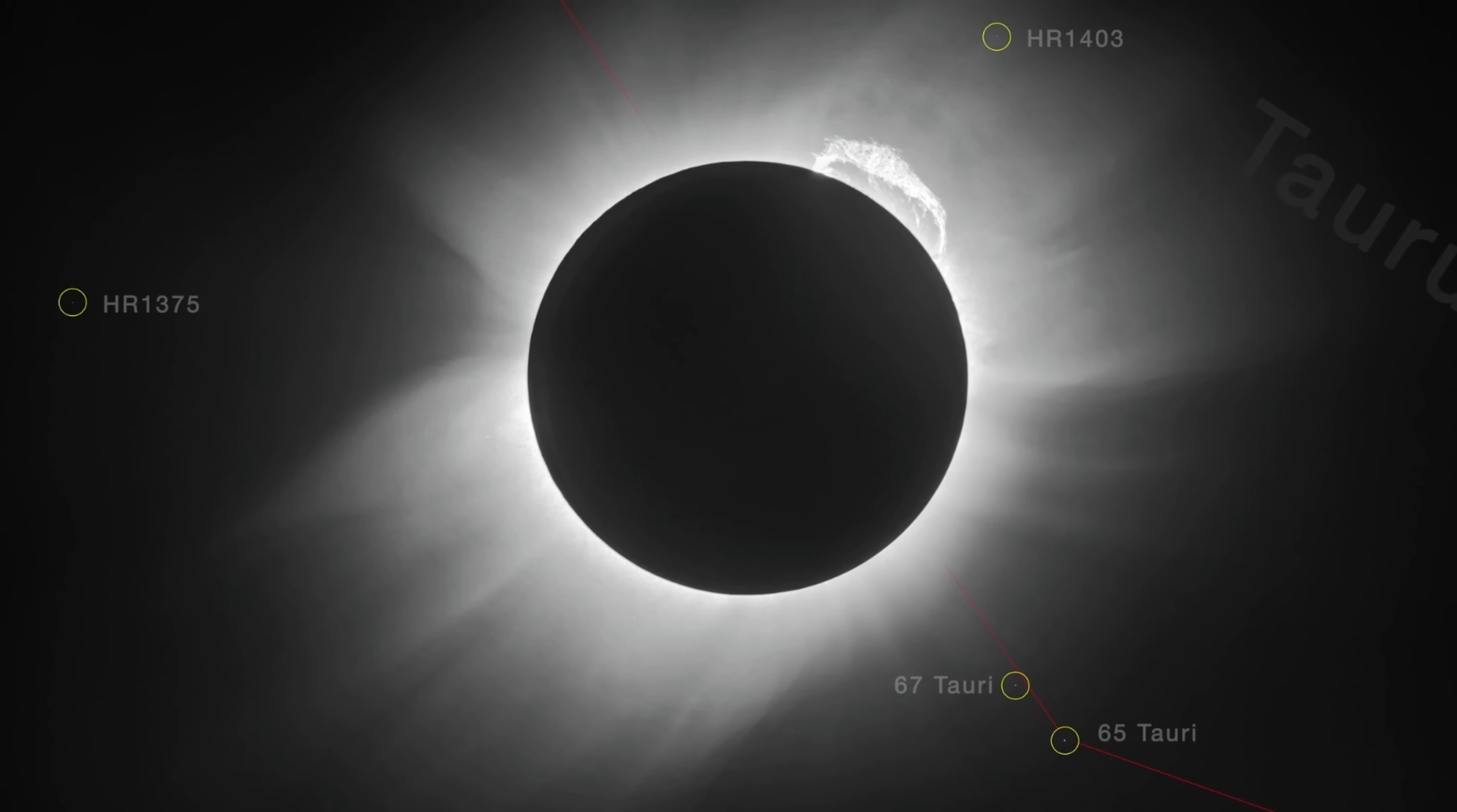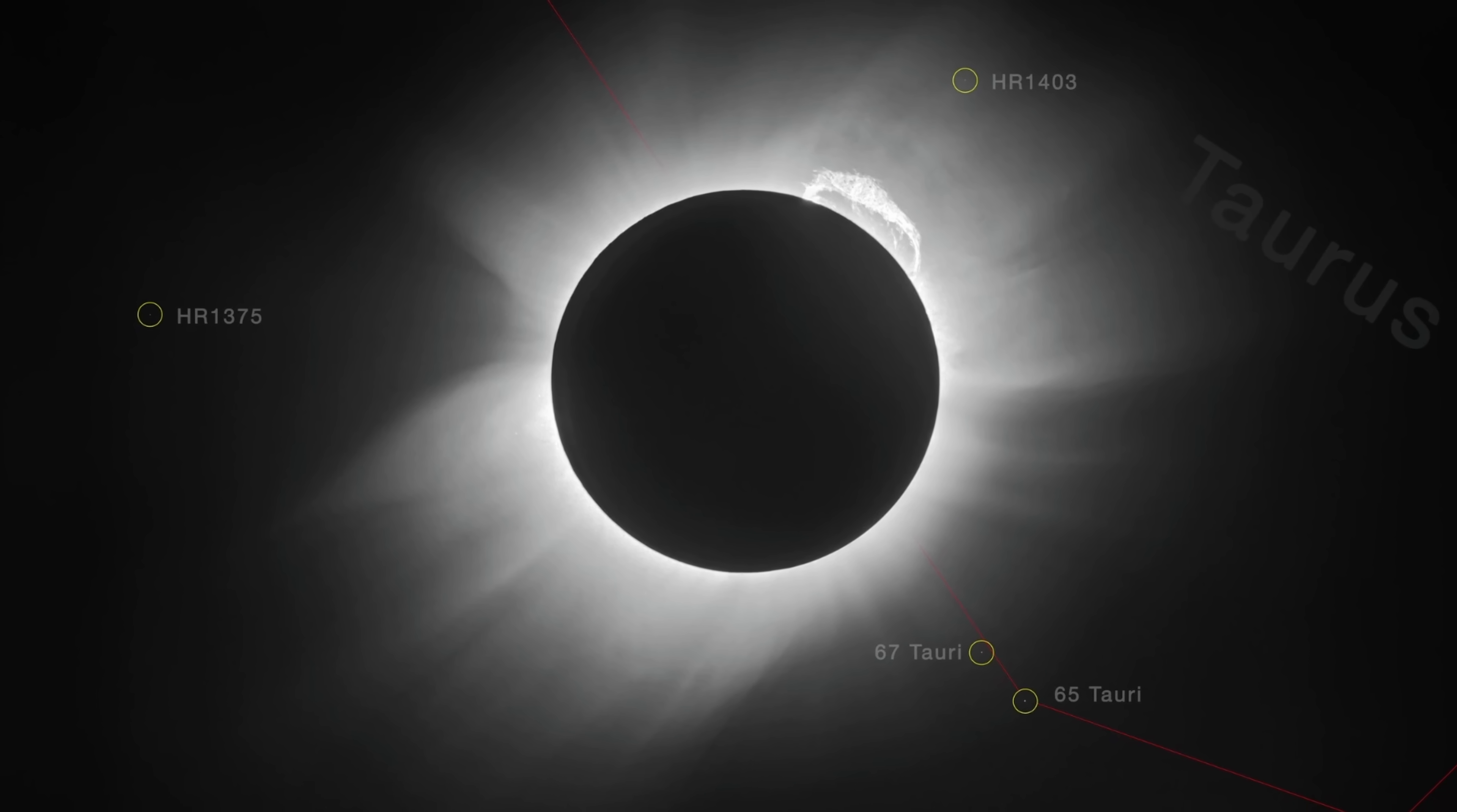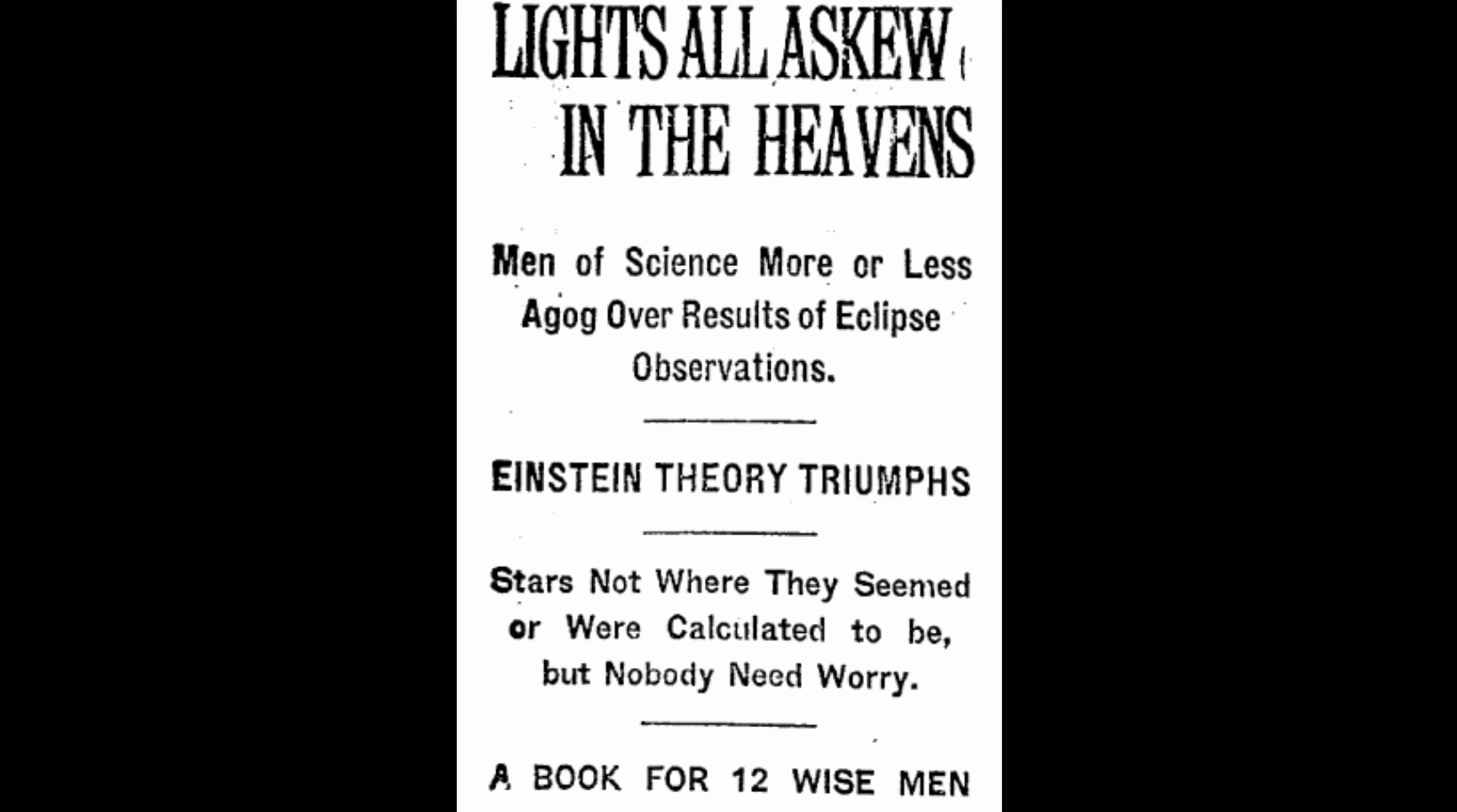This was the famous Eddington experiment that on 29th of May 1919 was able to prove Einstein correct by observing a slight deviations of the travel of starlight during the totality and during the solar eclipse, which basically resulted in this headline in the New York Times and also made Einstein pretty much famous overnight.